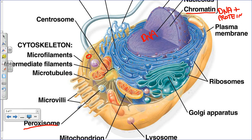Peroxisomes are organelles full of hydrogen peroxide used to detoxify compounds — transferring protons from toxins to create less toxic materials the body can handle. Mitochondria are very unique; they look similar to bacteria and have extra foldings internally to allow more reactions. Importantly, they have their own DNA and can divide inside the body without control of the nucleus. They are the primary site of ATP production.